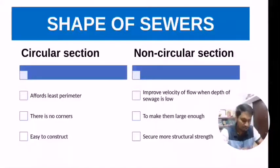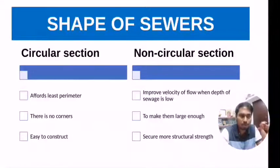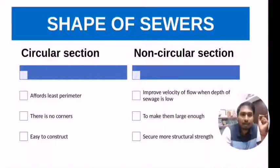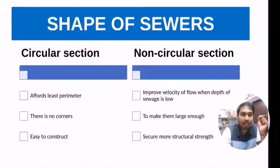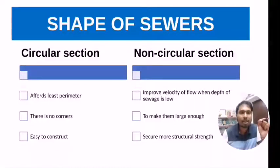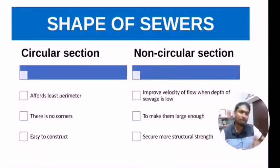For example, if you consider a square sewer pipe and a circular sewer pipe of 4 square meter cross-section, the square section has a perimeter of 8 meters while the circular section has a perimeter of 7.09 meters. This proves that circular sections are cheaper and more economical.